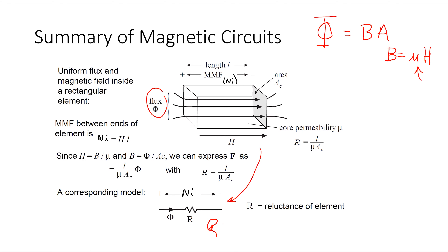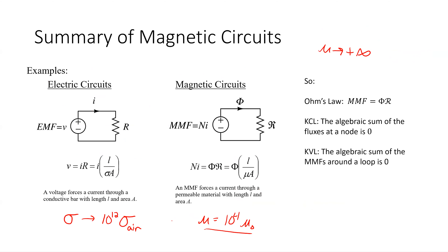So what's the magnetic form of voltage? MMF — magnetomotive force. And what causes that magnetomotive force? A current. So NI: MMF is the magnetomotive force that causes a flux. In summary for magnetic circuits, just like electric circuits, Ohm's law is voltage equals current times resistance. Here I have MMF equals flux times reluctance.